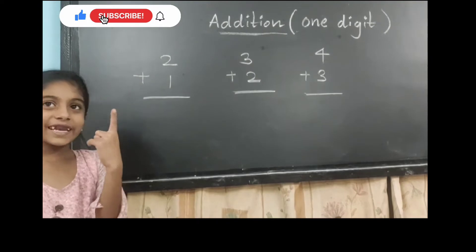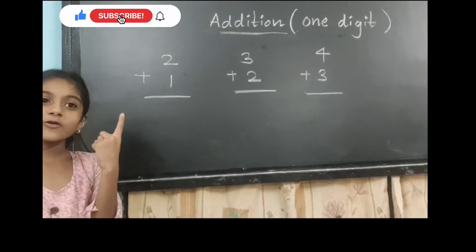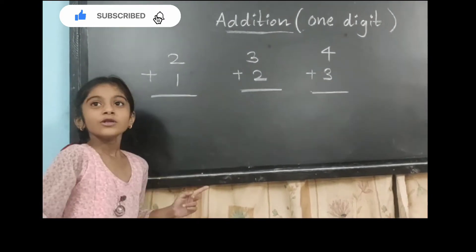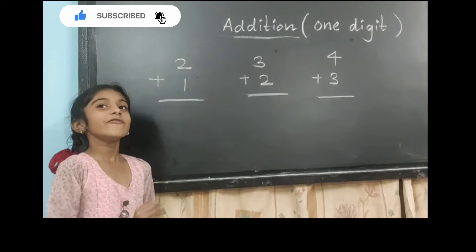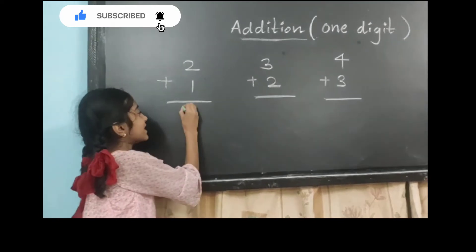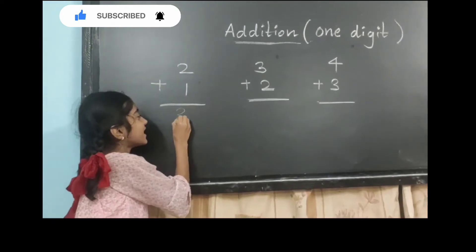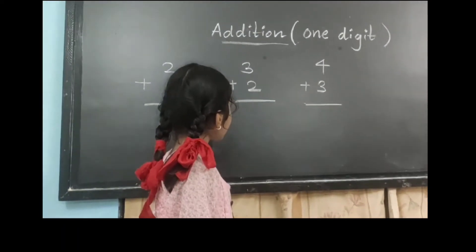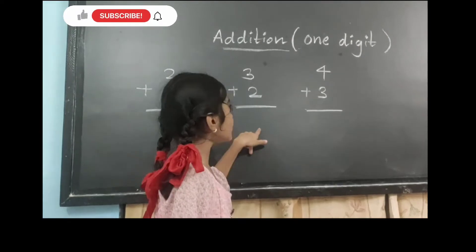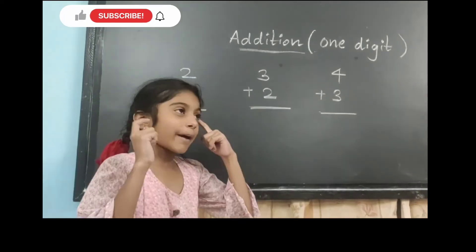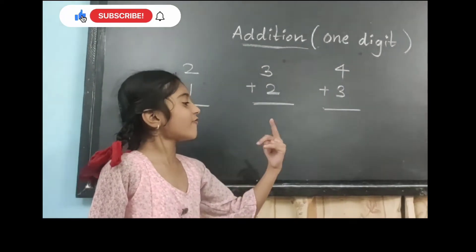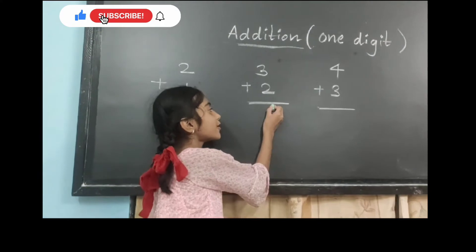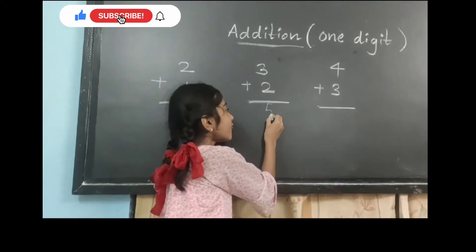You will find one in hand after two — three. So we will write here three. Next number is three plus two: three in mind, two in hand. After three: four, five. We will put here five.